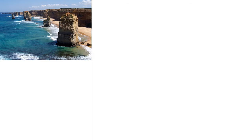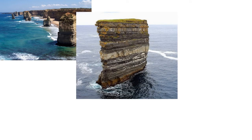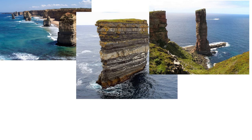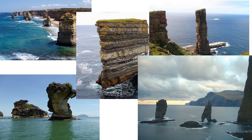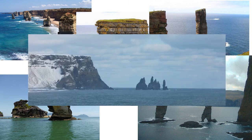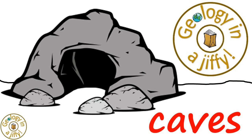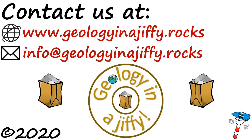In summary, coastal sea stacks are incredibly dramatic landforms, formed around many of our coasts around the world, as these images show — all formed by the same set of processes, but all unique in relation to their location, their geology, and their age. To find out more about caves, please do watch our Geology in a Jiffy film about caves. Please subscribe to my channel. Bye!